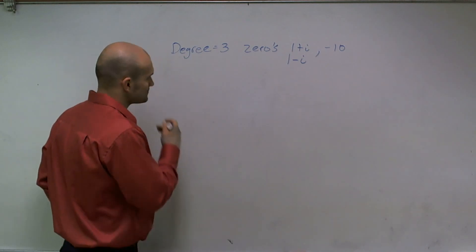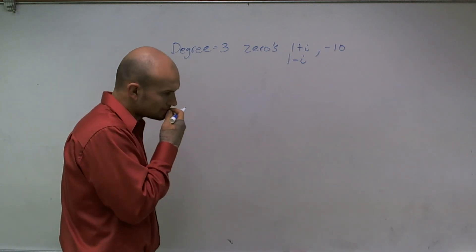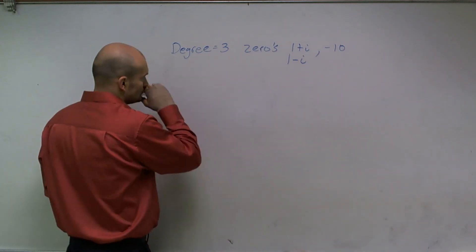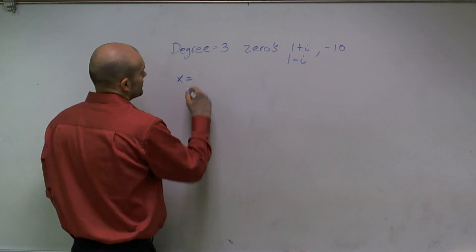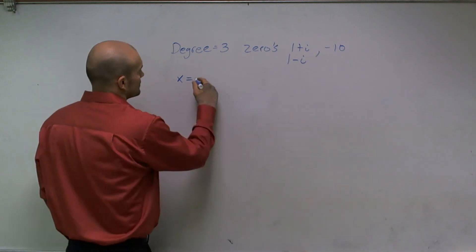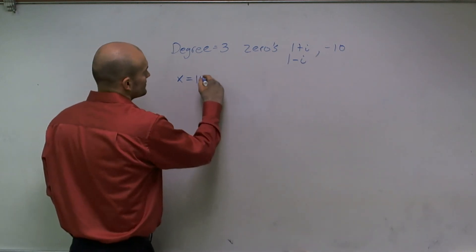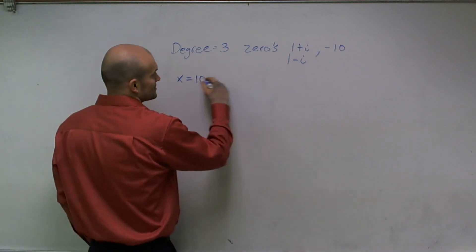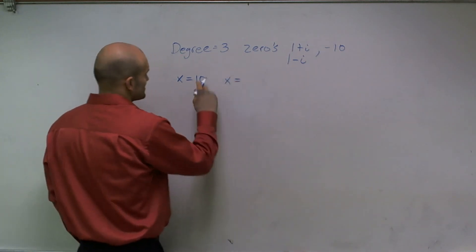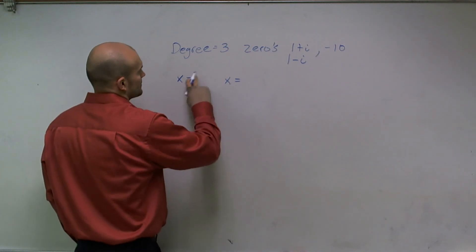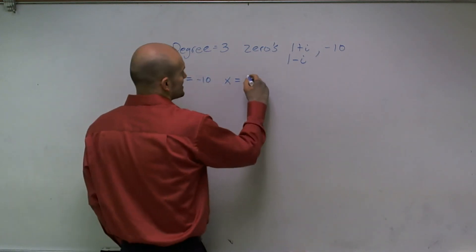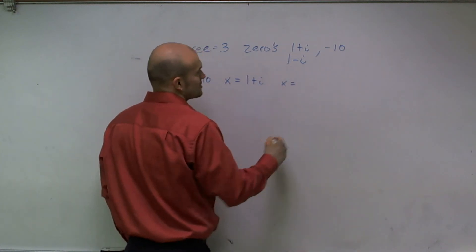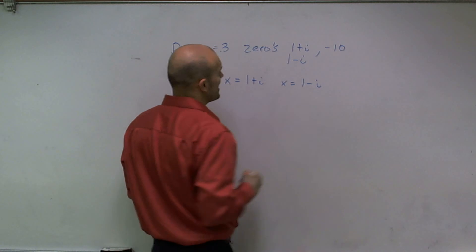Well, remember, when writing your zeros, this is the same thing as x equals 10. So therefore, this zero, here's my zero, so x equals negative 10, x equals 1 plus i, and also x equals 1 minus i.